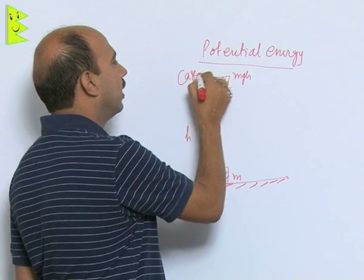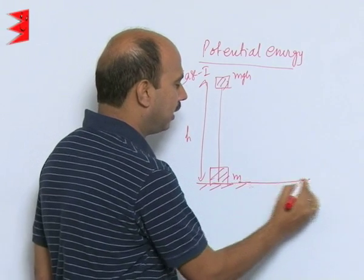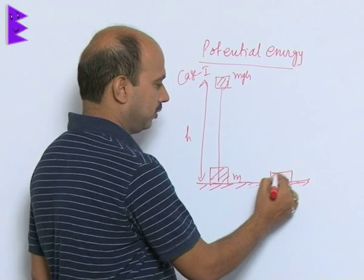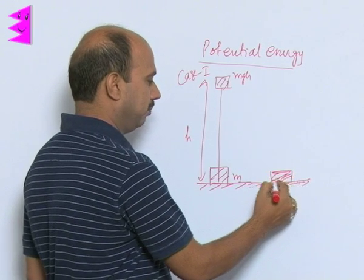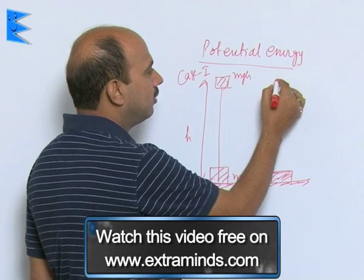This is case 1 we can take. And now what happens, we take case 2. Suppose the same object is taken over here, the mass is same m and now it is taken to the same height.